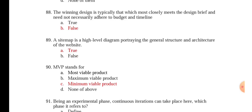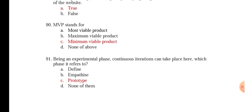A sitemap is a high level diagram portraying the general structure and architecture of the website. True. MVP stands for minimum viable product. Being an experimental phase, continuous iterations can take place here. Which phase is it referred to? It is the prototype phase.